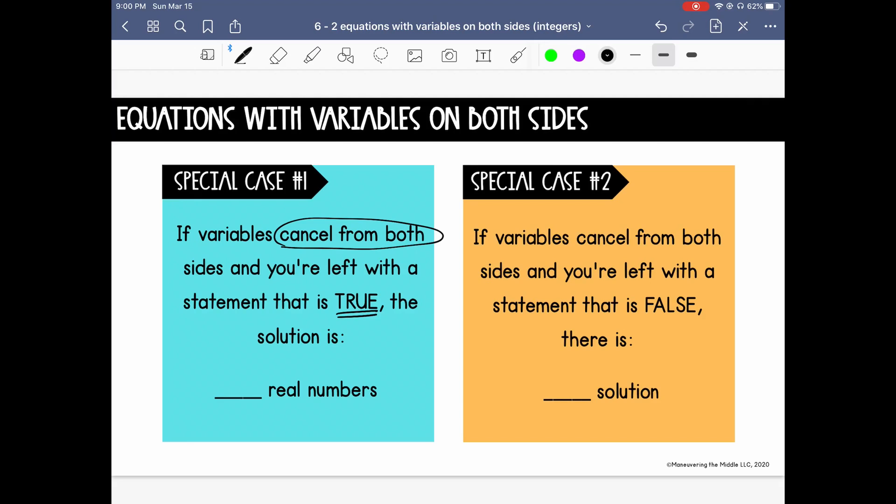so an example of that would be if you're left with something that says 3 equals 3. Because that is true, your solution is all real numbers, meaning any number for the variable would actually make the equation true.